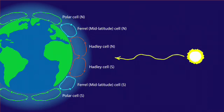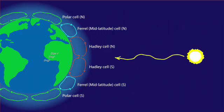Weather and climate are largely set by where these circulation cells meet. Near the equator, where warm air is being lofted by buoyant forces, low barometric pressure prevails, humidity is high, and rainfall is abundant.